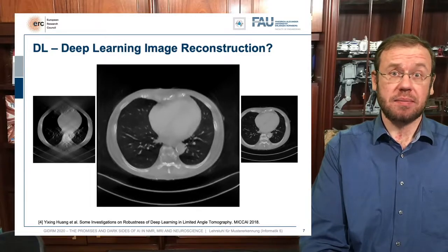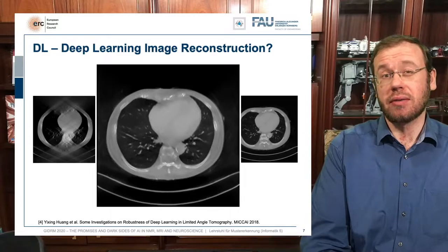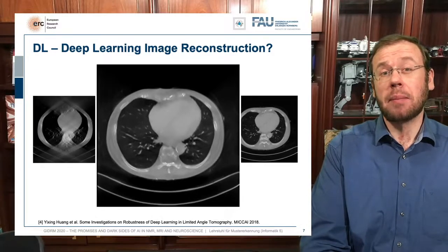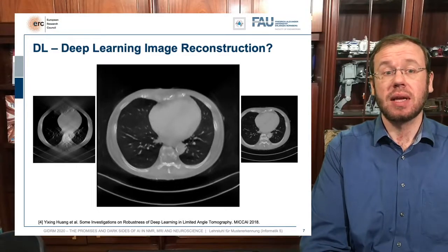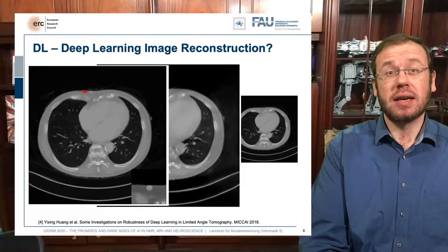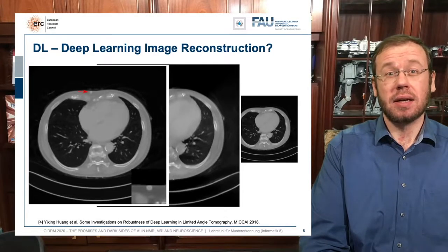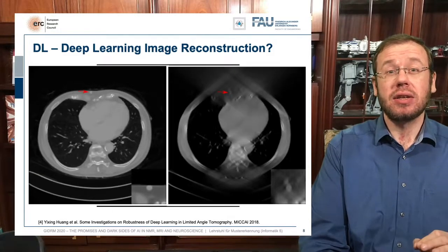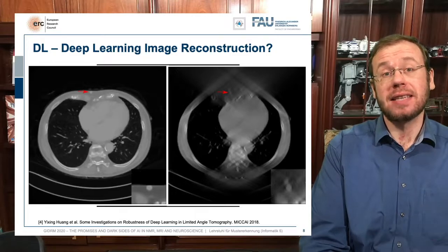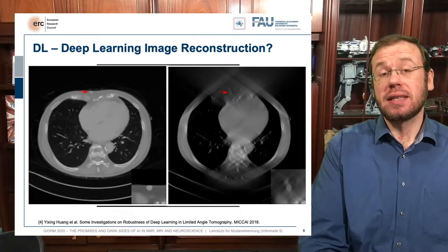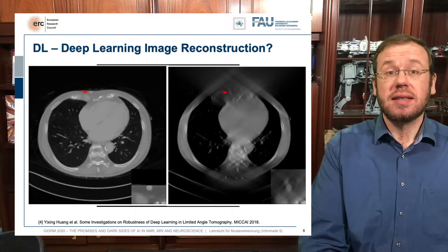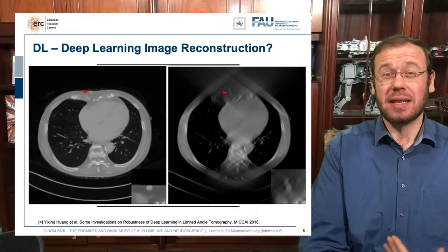Obviously this raises some doubts. Colleague Yixing Huang investigated what happens if you put lesions into these images — placing a lesion exactly in the rib cage, exactly in the location where we're missing the most data. In the partial reconstruction input, there is the most data missing and the large edge determining the rib cage limits is essentially not observed. The lesion is there but somewhat smeared and not very visible.